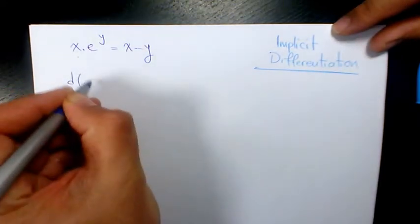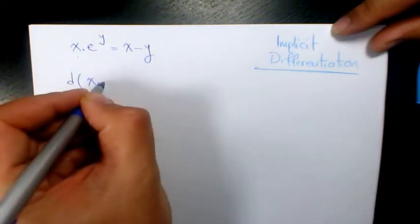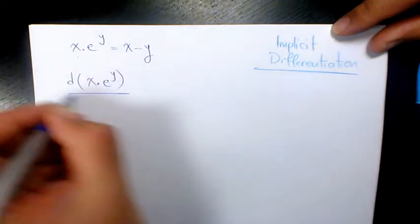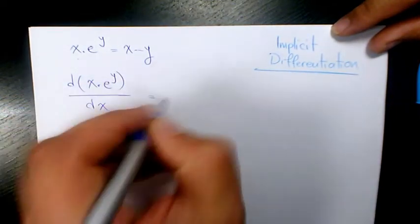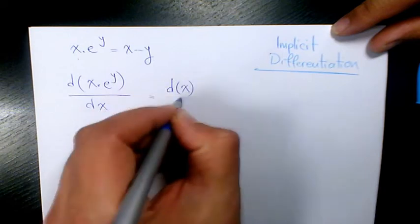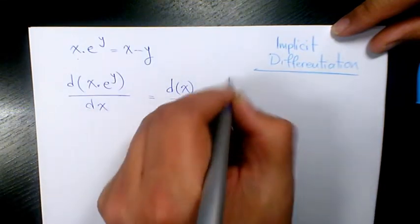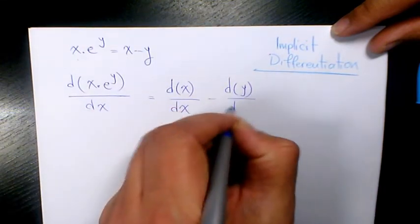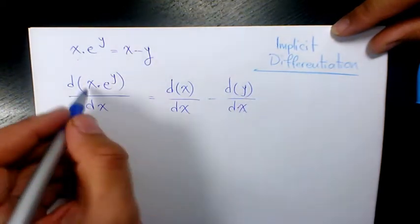So what I need to do is find the derivative of x times e to the power of y with respect to x equals the derivative of x with respect to x minus the derivative of y with respect to x.